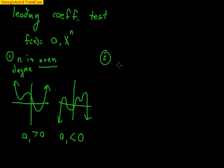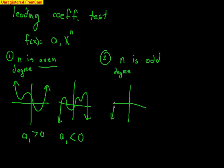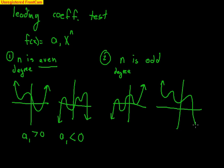The second case is if the degree n is odd — again, this is all called end behavior. If the degree is odd, one side is going up and one side is going down. We could have a graph where the left side is going down and the right-hand side is going up. The other option is that the left-hand side is up and the right-hand side is going down. If the leading coefficient is positive and the degree is odd, left goes down and right goes up. If the leading coefficient is negative, the left-hand side is going up and the right-hand side is going down.